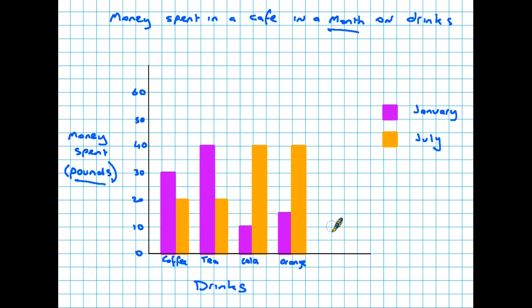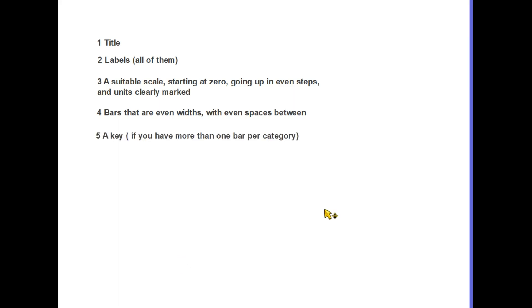So let's just have a look and recap the elements that you need in a graph if you're going to score full marks in a test. First of all it must have a title, tell the reader what your graph is about. Labels, and I mean all of them. Make sure you are labeling each category plus an overall label. Make sure labels are on both sides. Make sure there's a suitable scale starting at zero going up in even steps using whatever numbers you need, and mark the units if they are there. If it is in pounds or kilometers tell the reader what the scale means. Make sure your bars are even widths and make sure the spaces in between them are also nice and even. And if you do have more than one bar for each category as we saw earlier, make sure there is a nice clear key.